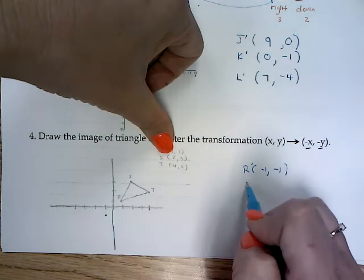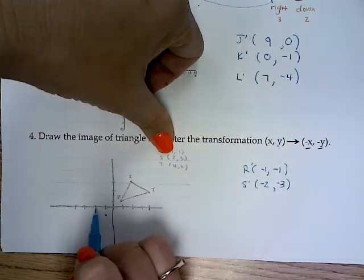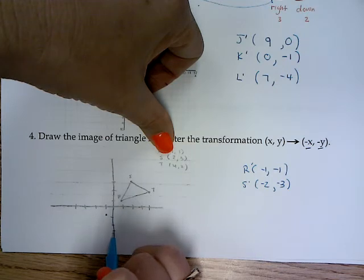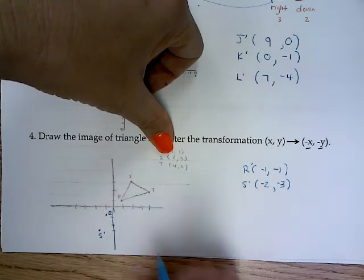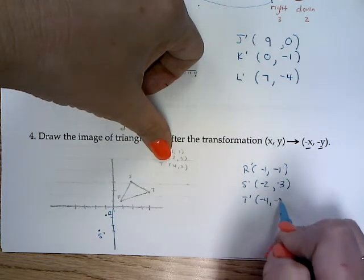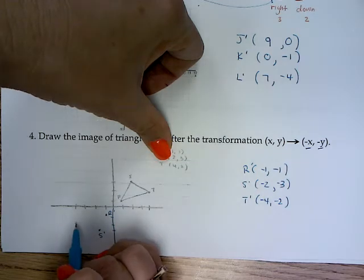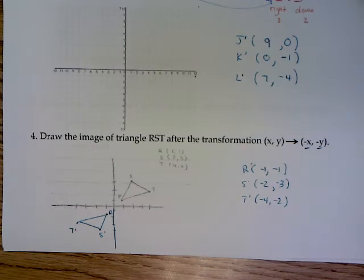On number two. So I'd be at negative two. That's coordinate. I don't know why there's no coordinate grid here. Negative three. Sorry, I didn't make that R prime. That's S prime. And T. And there is my image after my translation.